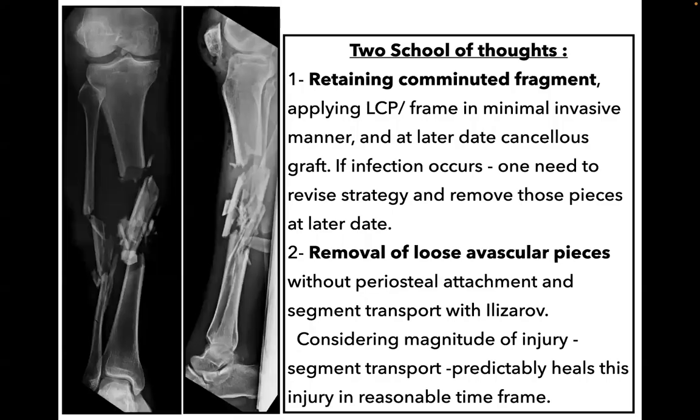There are two schools of thought in treating such injury. One is to retain the fragments and do osteosynthesis in the hope that the fragment will unite — applying LCP or an Ilizarov frame in a minimally invasive manner, and at a later date opting for cancellous bone graft. If infection occurs, one needs to revise the strategy, remove loose pieces, and do segment transport. Another strategy is to remove all loose avascular pieces without periosteal stripping on day one and perform segment transport with Ilizarov. Considering the magnitude of injury, segment transport predictably heals this injury in a reasonable time frame.